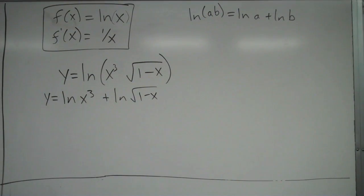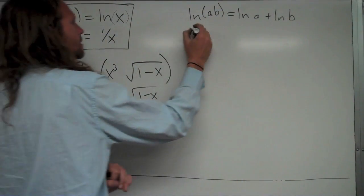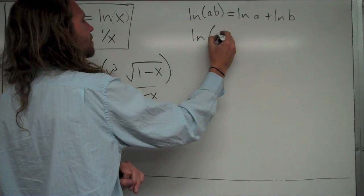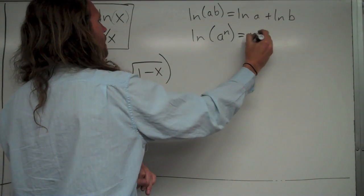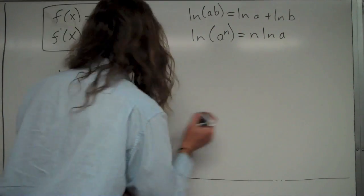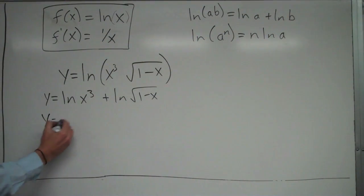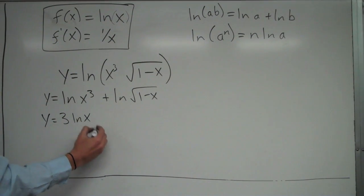So that would be a good start for me right there, but I could even simplify this further using natural log of a to the n equals n times natural log of a. And on this first one right here, I could bring the 3 in front according to this rule and make it 3 natural log x plus...